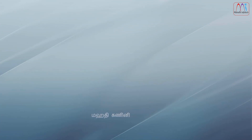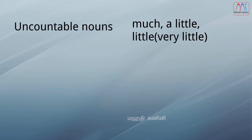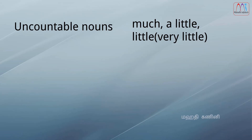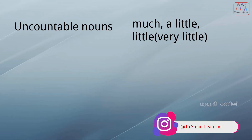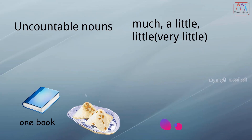Much, little, a little. These are used before uncountable nouns. An uncountable noun is a noun you cannot add a number to. For example, you can say one book, two books, etc., but you can't say one rice, two rice. So rice is an uncountable noun.